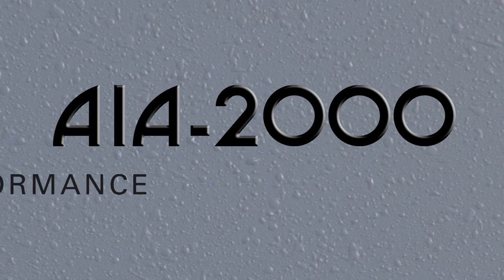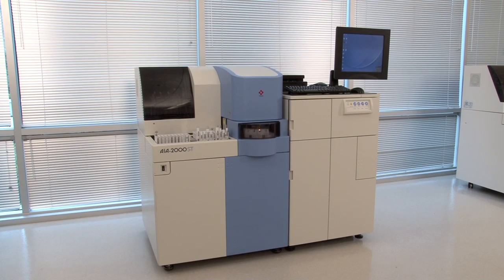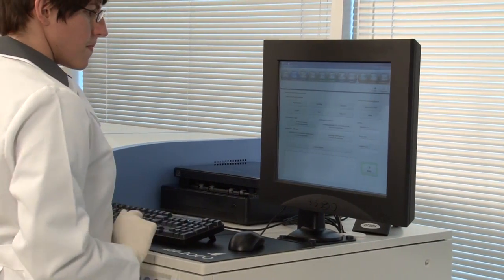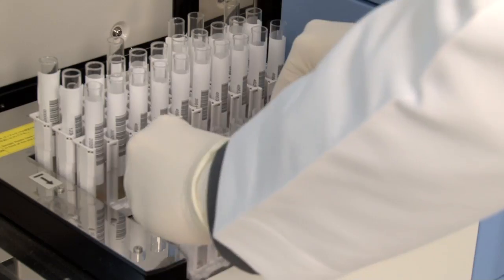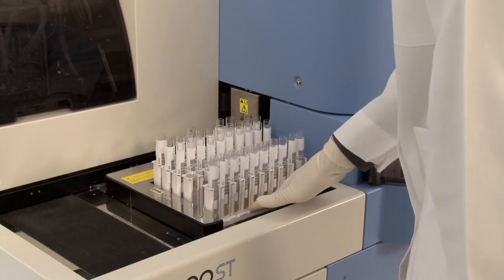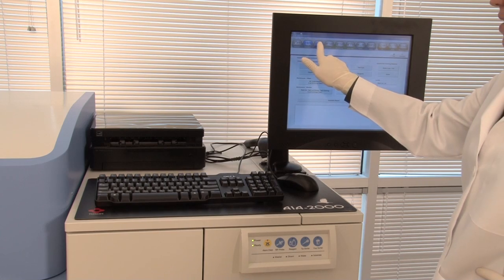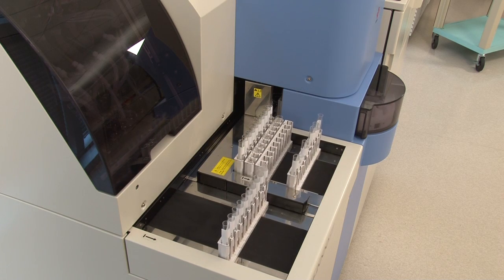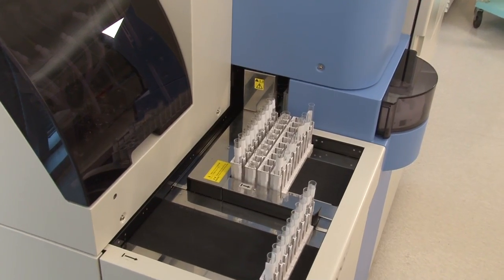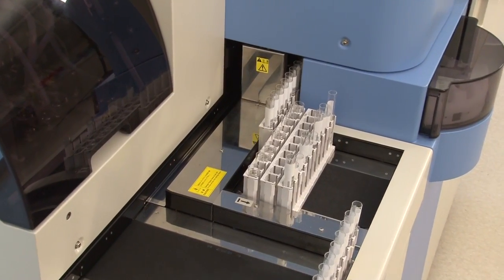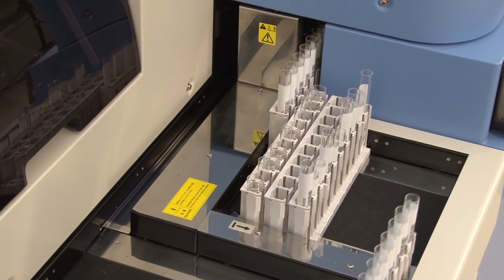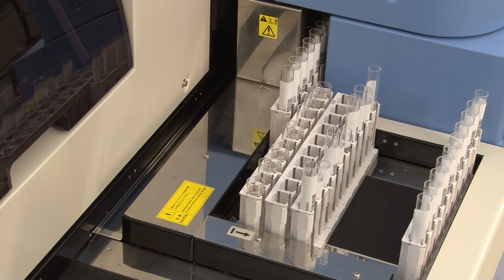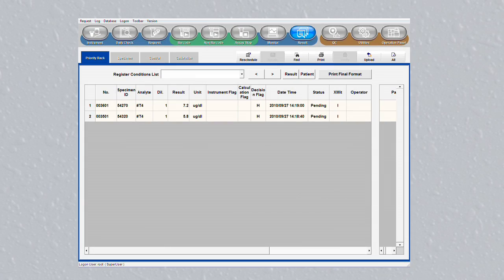Multiple STAT processing is available on the AIA-2000. To run a STAT test, the operator simply chooses the priority rack option and places the sample rack on the instrument. STAT samples designated on the work list will be processed with highest priority. Once STAT samples are processed, routine operation resumes automatically with no intervention from the operator. STAT results are listed in a separate window for easy review.